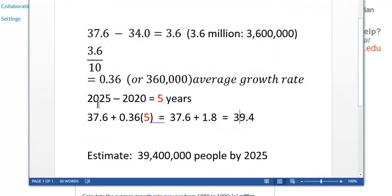So by 2025, that's five years time, right? We take what we have in 2020, which is 37.6 million people, and each year it's going to increase by 0.36. So you multiply that by 5. Over the five years, it's going to increase by 1.8 million people. You add that to 37.6 and we come up with 39.4. So we're going to estimate that we'll have 39,400,000 people in Canada by 2025.